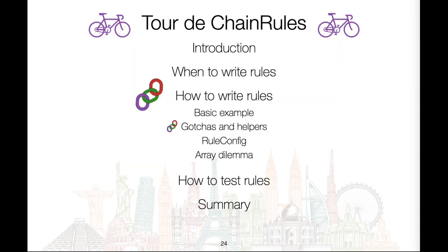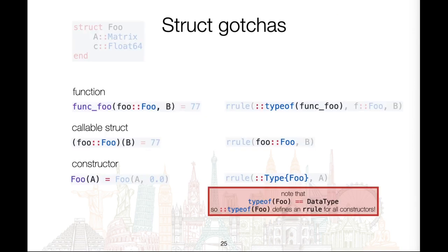Having worked through a basic example, let's now examine some gotchas and helper macros which define frules and rrules automatically. There are three things we can do with structs: pass them as arguments to a function, make them callable, or create an instance. The rules for each of these have different signatures. We have already seen using lowercase typeof to dispatch on a function followed by the arguments of the function. The rrule for a callable object has only the object and the arguments in the signature.